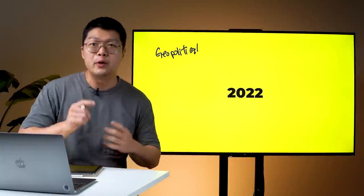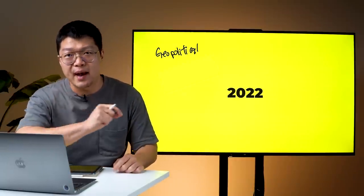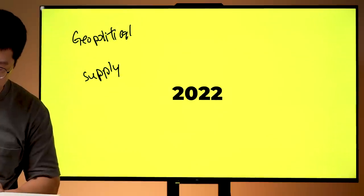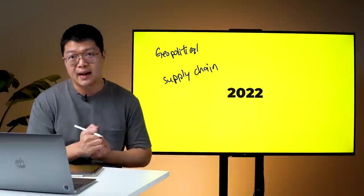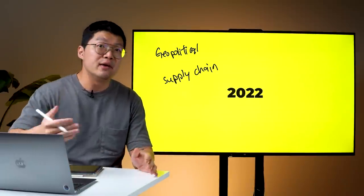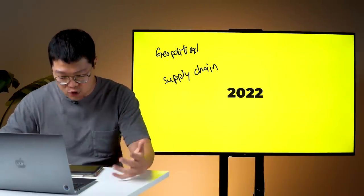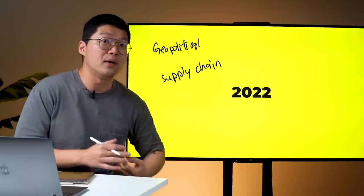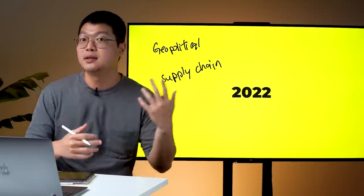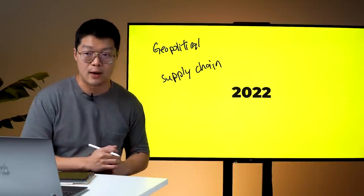So what happened subsequently is that it triggered into an energy crisis whereby Europeans were suffering from a lack of oil and gas. They had to go through a very cold winter and that shot up oil and gas prices to the roof.